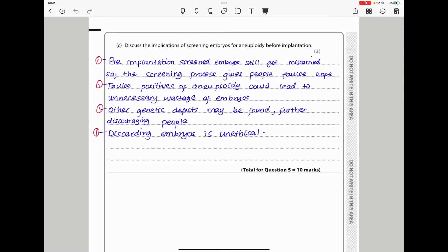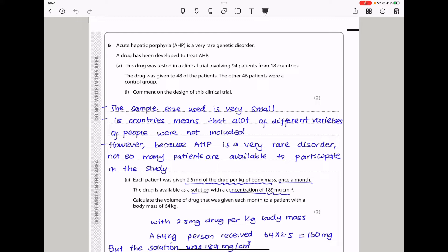Let's continue to question 6. Acute hepatic porphyria, AHP, is a very rare genetic disorder. A drug has been developed to treat AHP. This drug was tested in a clinical trial involving 94 patients from 18 countries. The drug was given to 48 of the patients, and the other 46 patients were a control group. Comment on the design of this clinical trial. Looking at the information, only 94 patients were used in total. Therefore, the sample size used is very small.